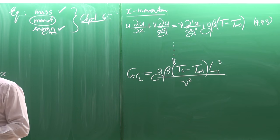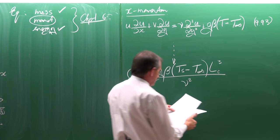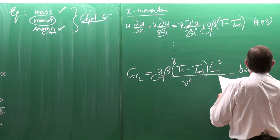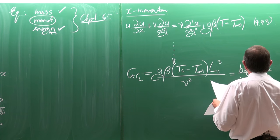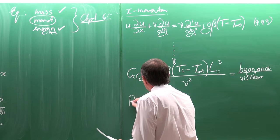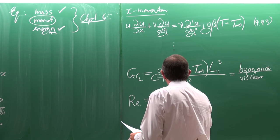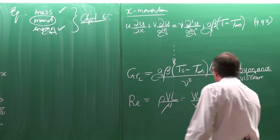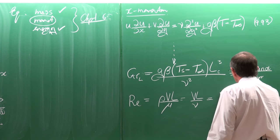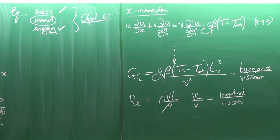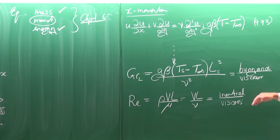The Grashoff number is a non-dimensional number representing the ratio of buoyancy forces to viscous forces. Compare this to the Reynolds number — rho·V·L/mu or V·L/ν — which is the ratio of inertial forces to viscous forces. So Grashoff gives buoyancy-to-viscous, while Reynolds gives inertial-to-viscous.